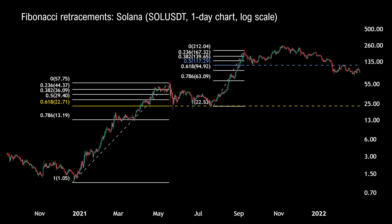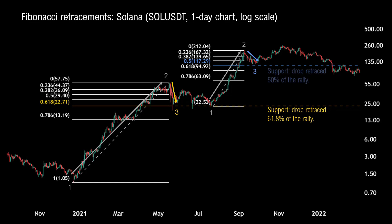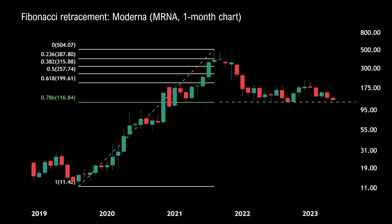Let's run through a few examples of the different Fibonacci retracement levels in action, using the one-day chart of Solana. Here's the 0.618 Fibonacci retracement — the price retraced 61.8% of the previous rally before finding support, which we call a bullish Fibonacci retracement. The price then took another leg up, and after topping out, the next drop retraced 50% toward the 0.5 Fibonacci retracement level in blue. And here's Moderna stock on the one-month chart retracing to the 0.786 Fib level in green before finding strong price support.